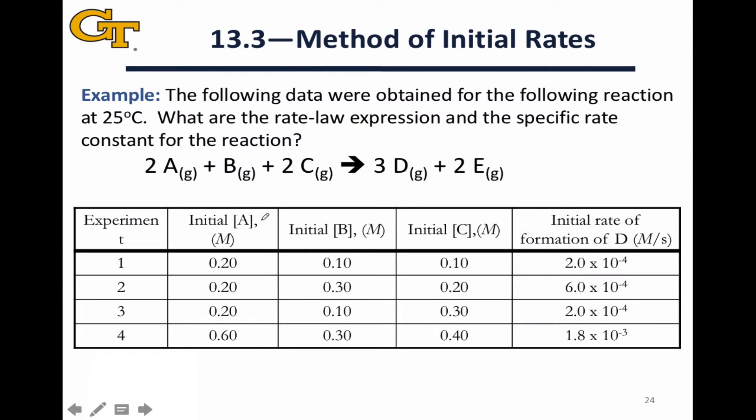So let's look now at an example of applying the method of initial rates. Here we have a fairly beefy reaction with three different reactants and two different products involved, and we're going to measure the initial rate by looking at the initial formation of D at the very start of the reaction. There are three reactants, A, B, and C, and we look at the initial concentrations of all three of these in the middle columns of the table.